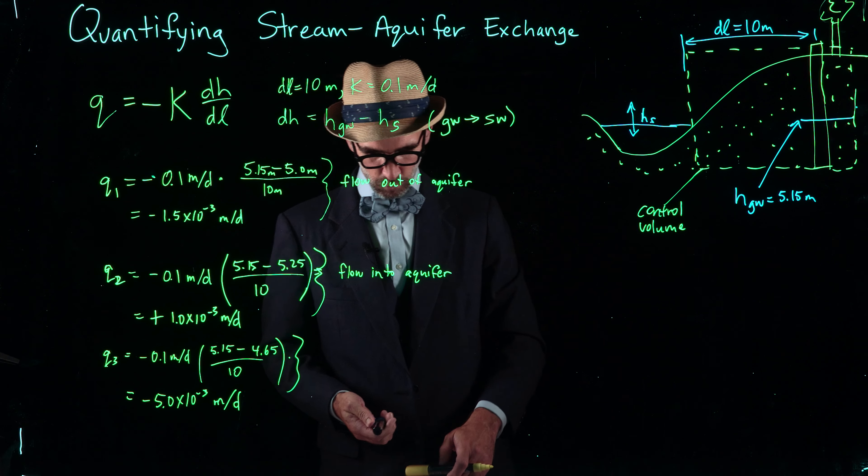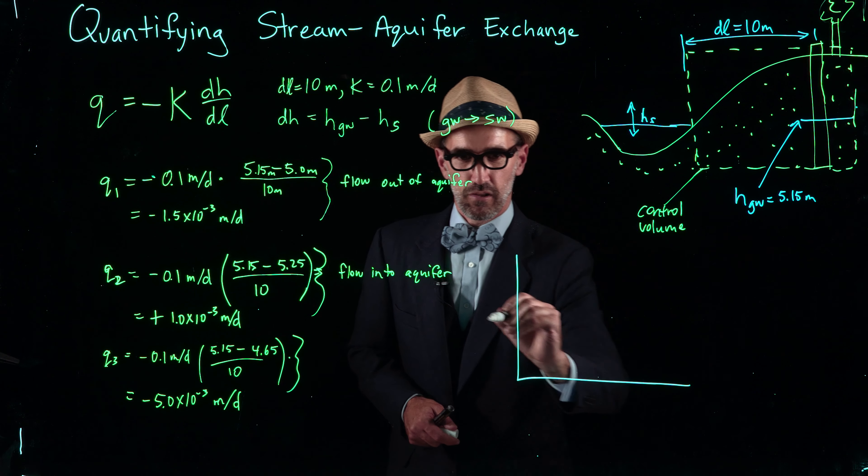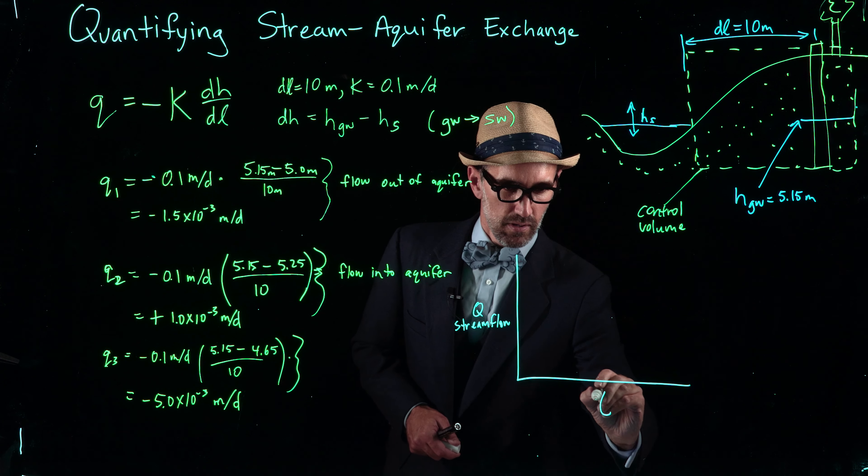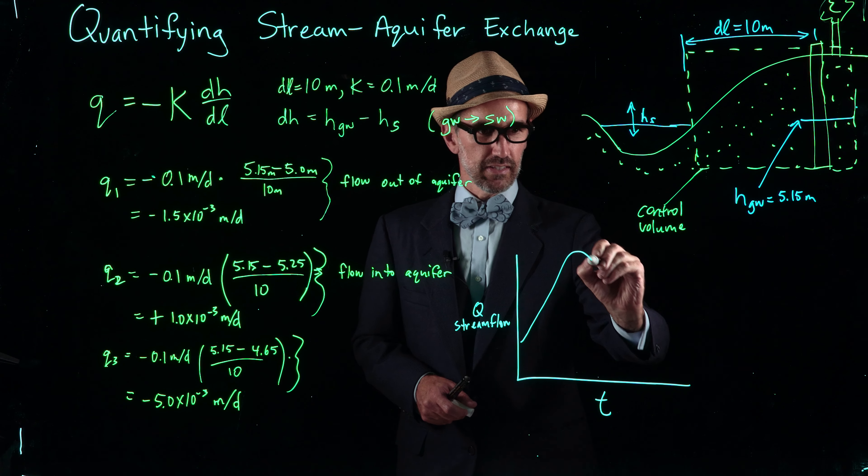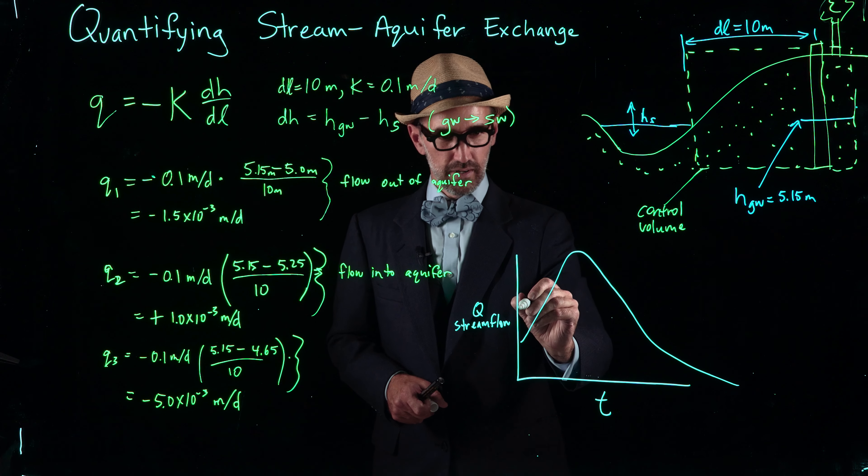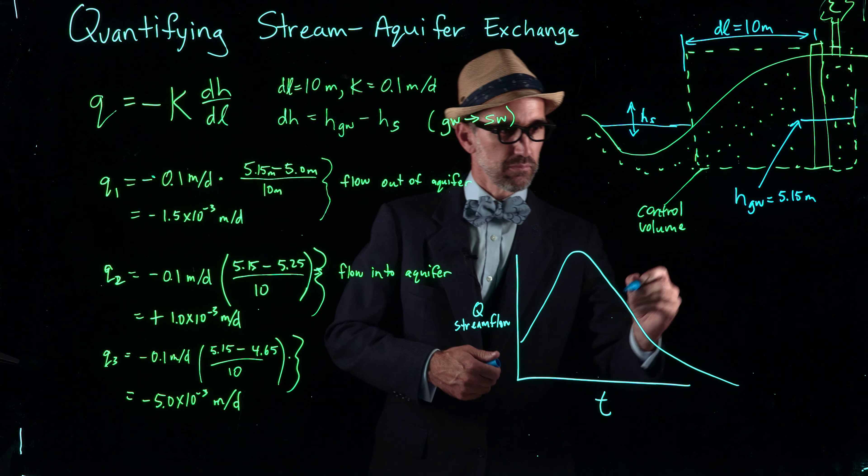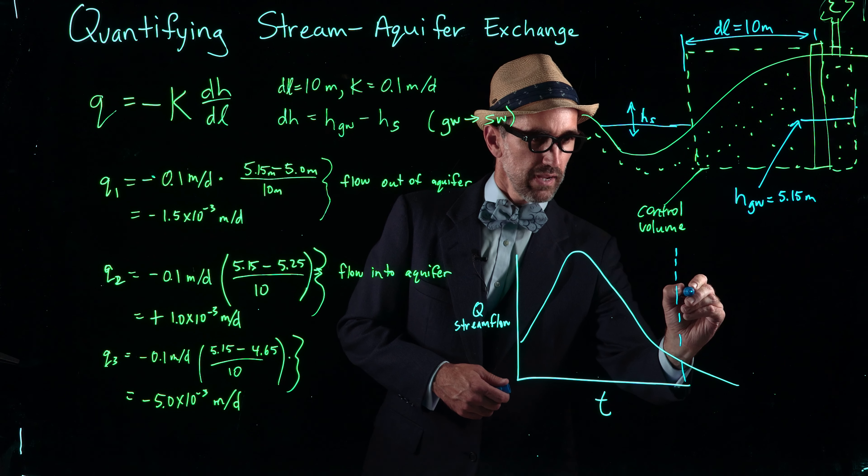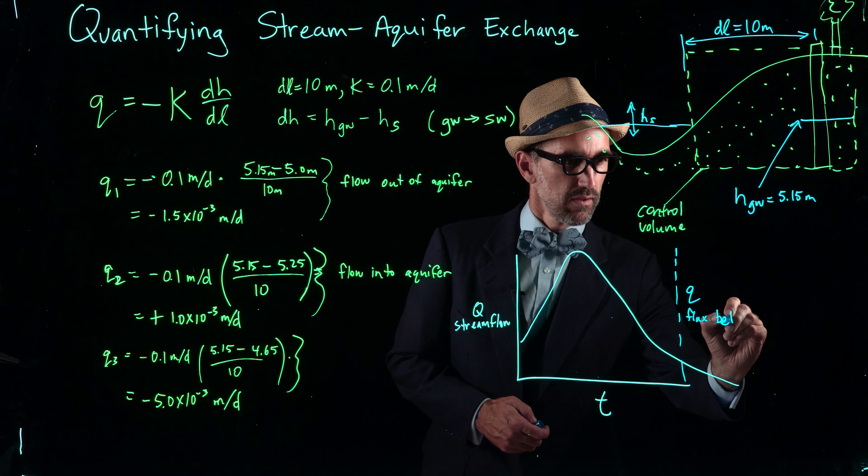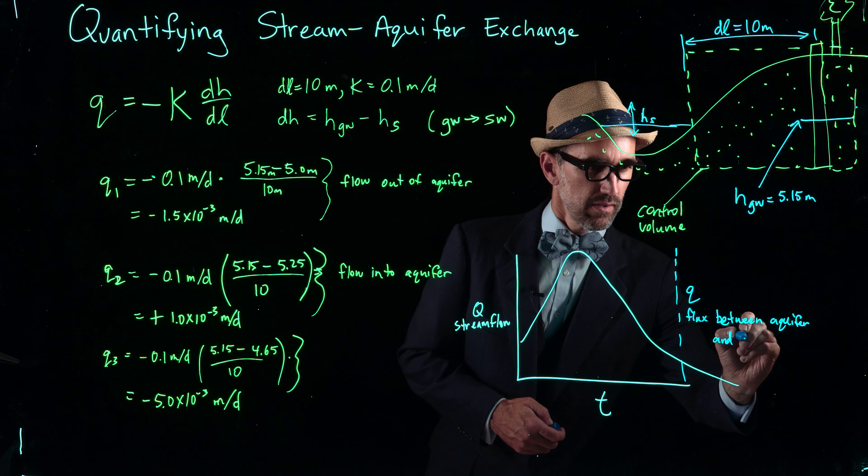What does that look like in that first graph we showed? We have stream flow, big Q, through time. The graph looked something like this, and this was the peak storm. Our q1 here, and I'm going to have two y-axes. On our second y-axis I'll label this in blue. Our small q is the flux between aquifer and stream.